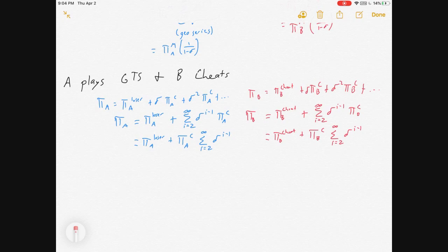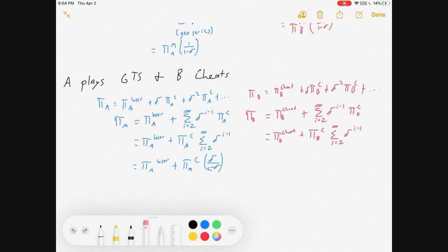You're going to start your summation at i equals 2, instead of i equals 1, which means in your GeoSeries, you now have a delta over 1 minus delta, instead of a 1 over 1 minus delta. So, that is important to remember.